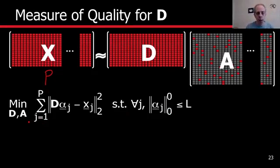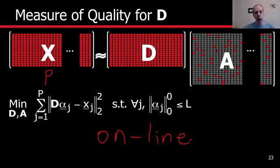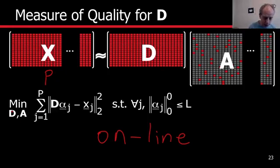I'll describe how to do that when we already have p signals and are going to learn the dictionary. As the number of signals increases, we can do a similar type of online learning. Online means we basically learn and adapt the dictionary as the images are coming, so we don't have to have huge memory to save all the images. The implementations I mentioned that you could download from the web do that in an online fashion, so they can deal with millions of images with absolutely no problem. My goal now is to show you how we do this learning.